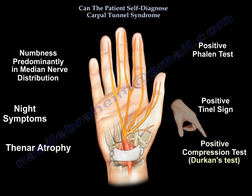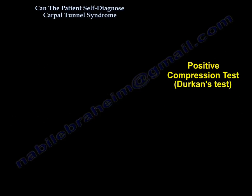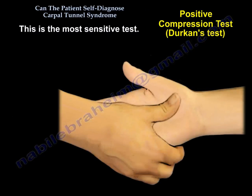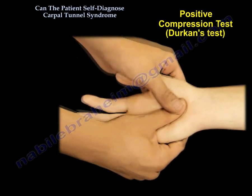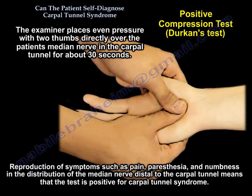The Durkan's Compression Test is the most sensitive test. The examiner places even pressure with two thumbs directly over the patient's median nerve in the Carpal Tunnel for about 30 seconds. Reproduction of symptoms — such as pain, paresthesia, and numbness in the distribution of the median nerve distal to the Carpal Tunnel — means the test is positive for Carpal Tunnel Syndrome.